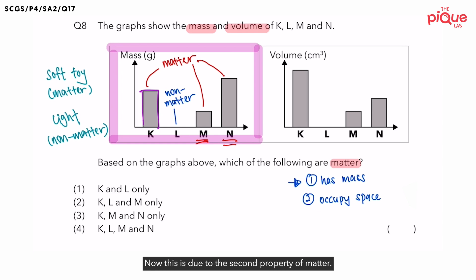So what is the second property of matter again? It is that matter occupies space. What does it mean when matter occupies space? It means that matter has volume.